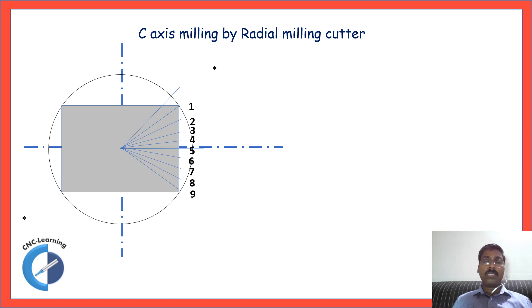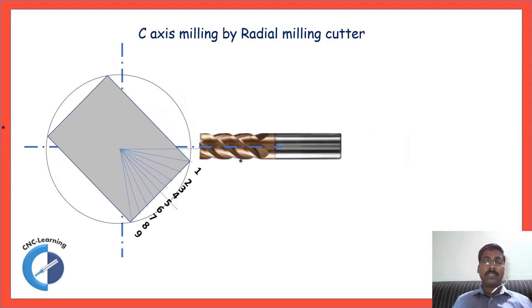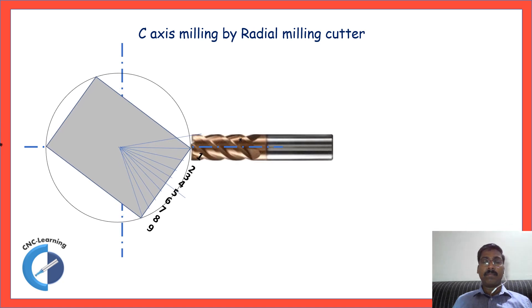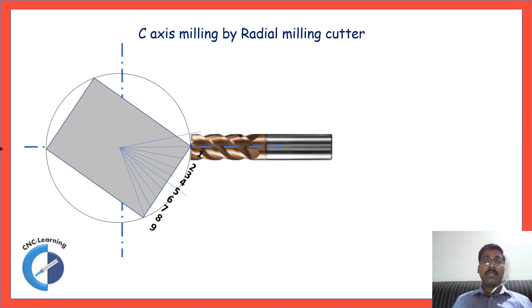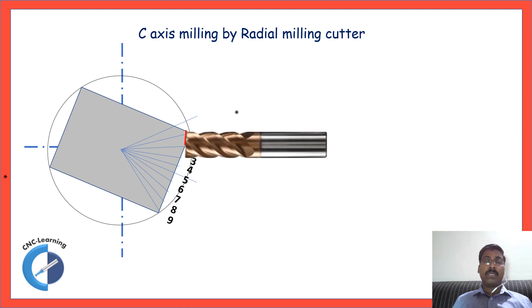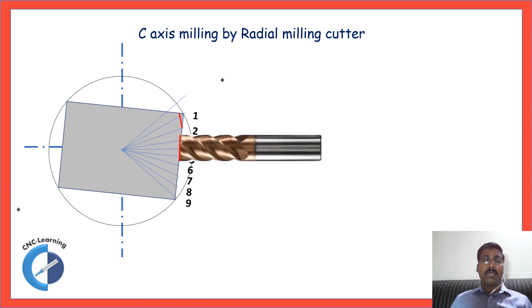Actually, there is a limitation which we will see using this animation. You can see there is a fouling. When the cutter is positioned to a particular coordinate, it is removing material from the other side. So, for each movement, the cutter will be removing some extra material, some fouling will happen.